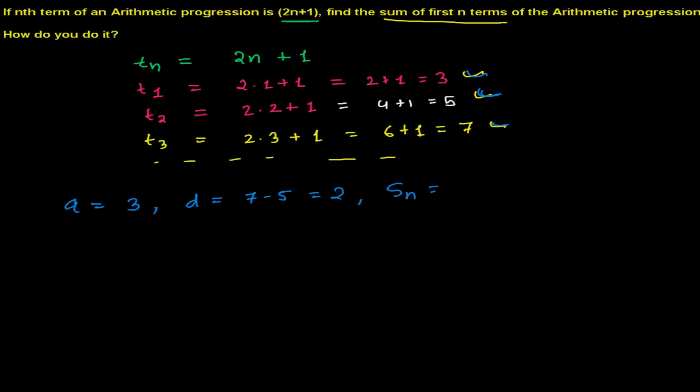And now you need to find out the sum of the first n terms. We don't know the value of n, how many numbers there are, so directly I'm going to use the formula of sum of n terms, that is Sn equals n by 2 in the bracket, 2a plus n minus 1 times the common difference.